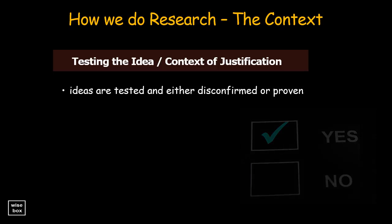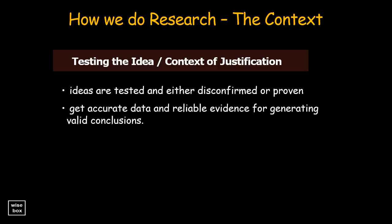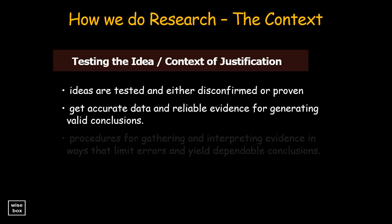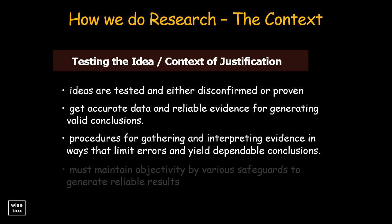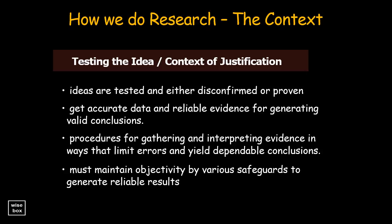The scientific method is used to get accurate data and reliable evidence for generating valid conclusions. It is a general set of procedures for gathering and interpreting evidence in ways that limit errors and yield dependable conclusions. It demands special attitudes and values in researchers. Researchers must also maintain objectivity through various safeguards to generate reliable results that can be repeated in similar conditions by independent investigators.